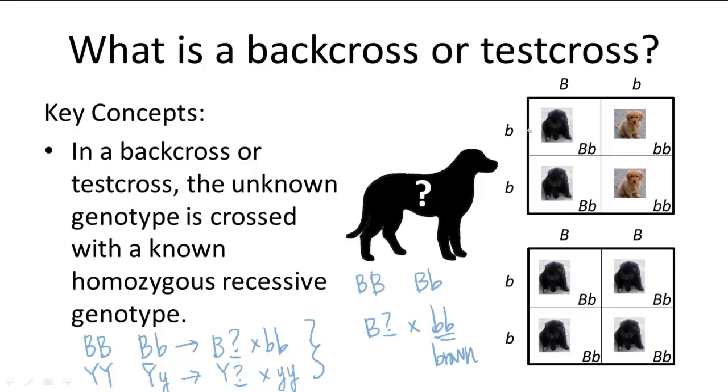And you can simplify this above Punnett square to only have one row as we've been doing in our monohybrid and dihybrid crosses because they're like the same thing. And there's actually only one gamete combination for the brown dog individual.